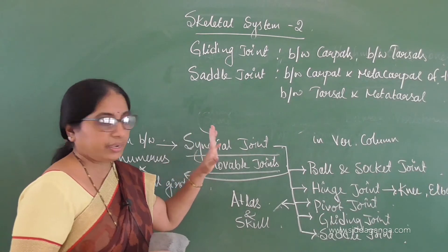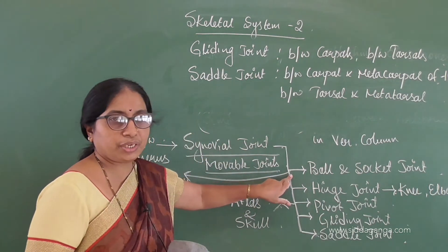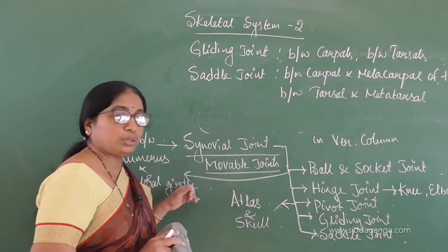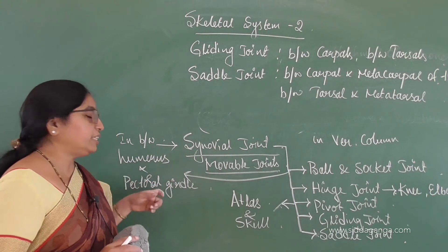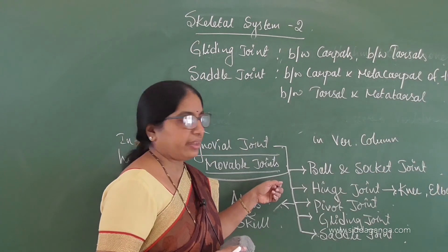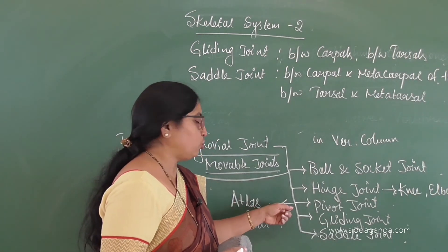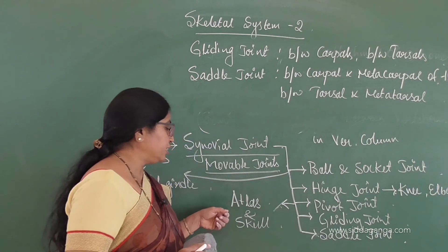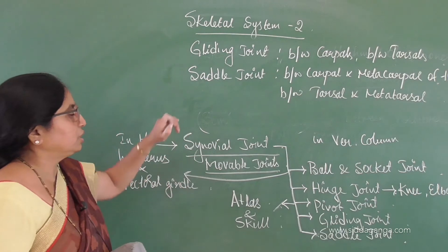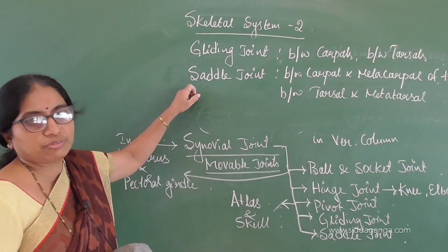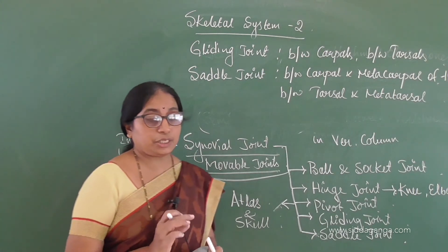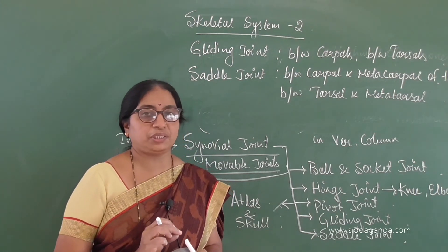Synovial joints are of five types: the ball and socket joint between the humerus and pectoral girdle — and also between the pelvic girdle and femur — the hinge joint at the knee and elbow, the pivot joint between the skull and atlas, the gliding joint between carpals or tarsals, and the saddle joint between carpal and metacarpals of the thumb. These are the exact locations where these joints are present in our body.